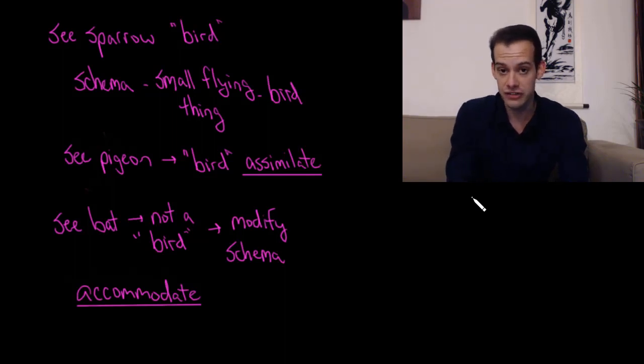Now we can also imagine a situation where the child sees a bat. When the child sees the bat, the child says, bird. And mom says, actually, no, that's not a bird. Now the child has to modify their existing schema about how the world works. They have to realize that not all small flying things are in fact birds. So they're going to have to make some adjustments to their schema. This means they're going to accommodate in order to make sense of this new information.